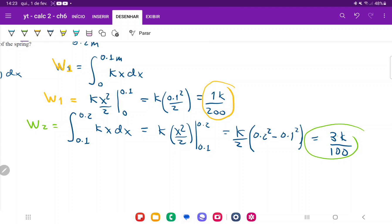We can see that W1 is k over 200 and W2 is 3k over 200. So W2 is exactly 3 times as large as W1, and that is our final answer for problem number 11.